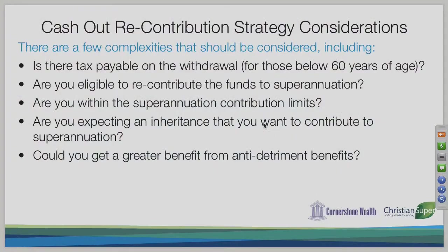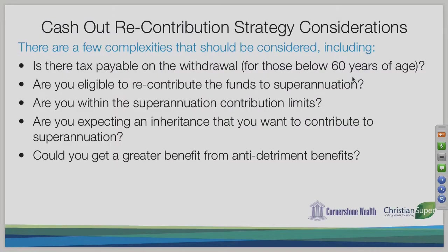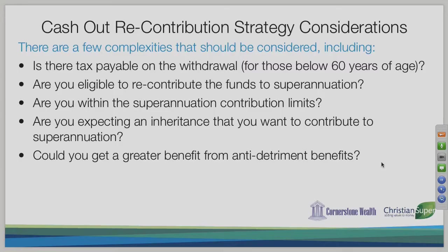There are a few factors to consider with the cash out recontribution strategy. First, is there tax payable on the withdrawal? If you're under age 60 and withdrawing over $185,000, tax may be payable. Second, are you eligible to recontribute? If you're 65 and not working, you're not allowed to put money back into super. Third, are you within the contribution limit — $180,000 per year, or up to $450,000 if you're under 65 using the bring-forward rule? Finally, are you expecting an inheritance? Sometimes we don't use the strategy if we want to preserve the contribution limit for incoming funds.